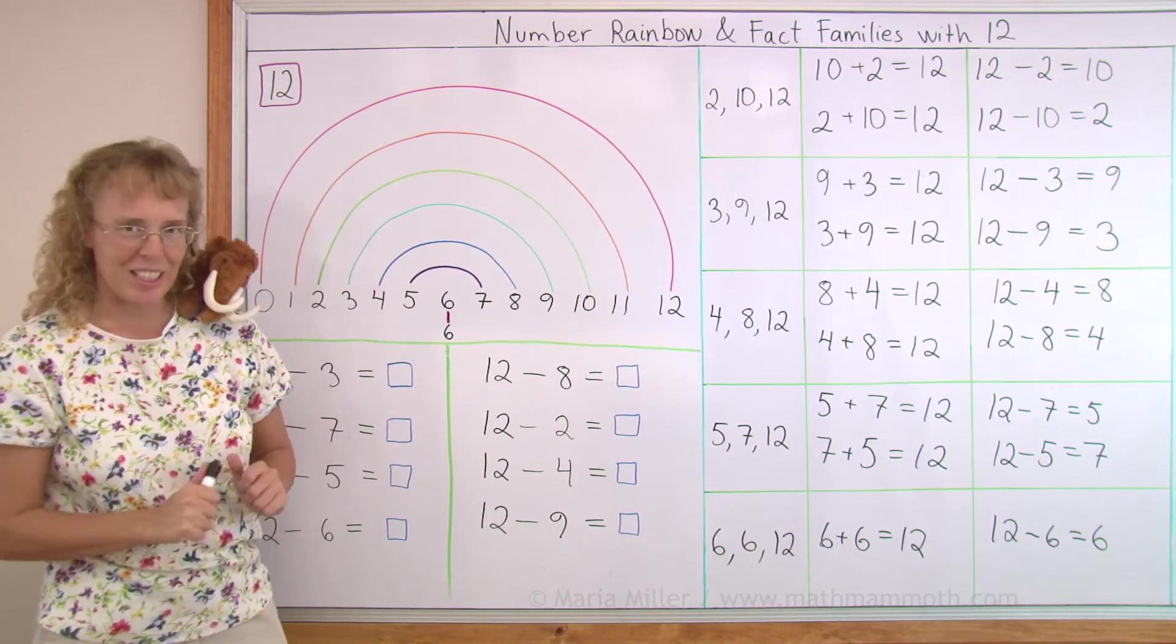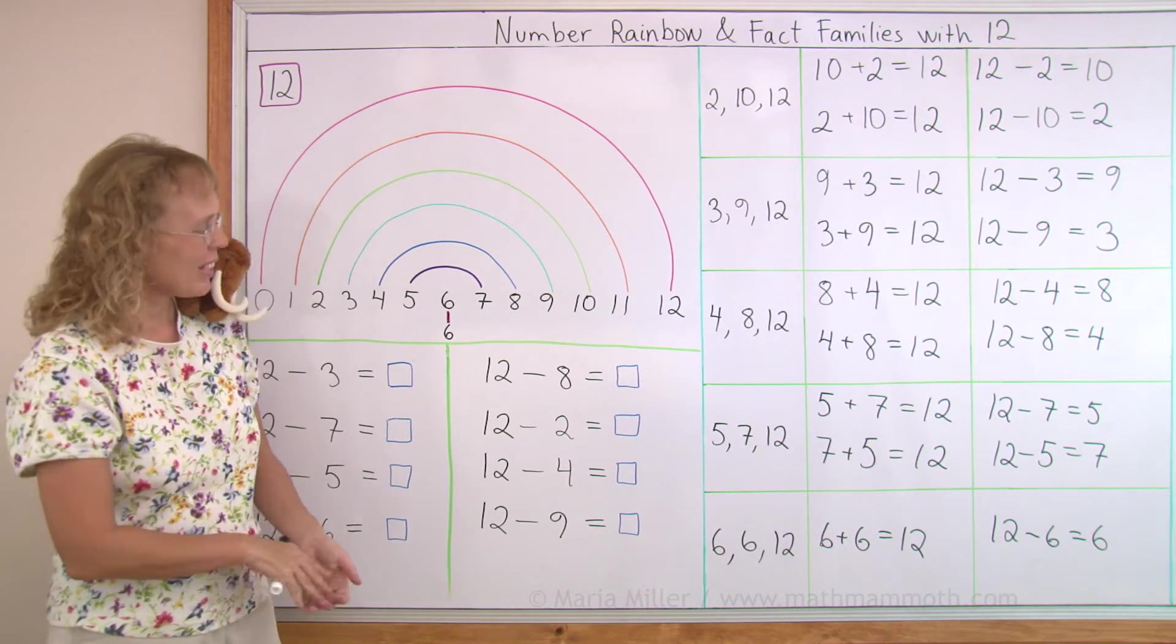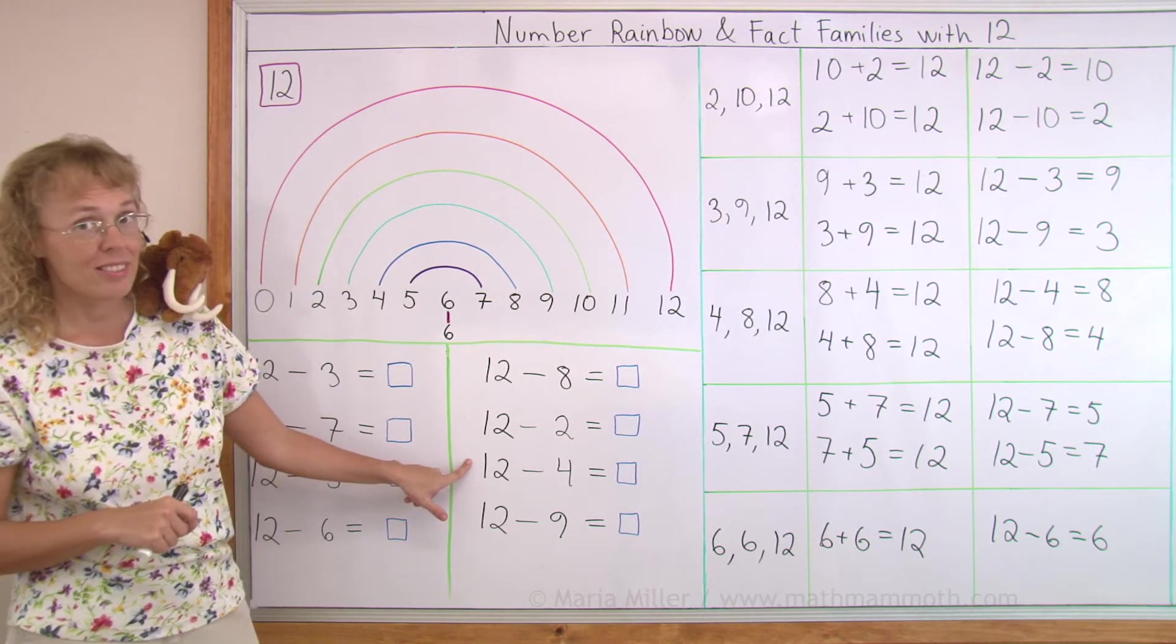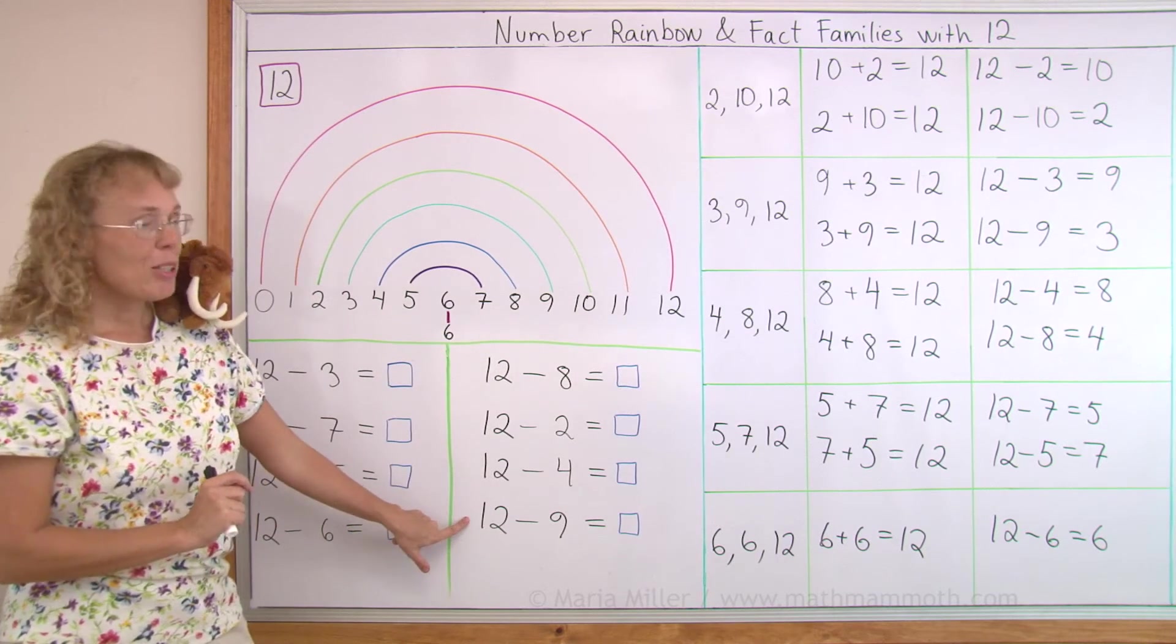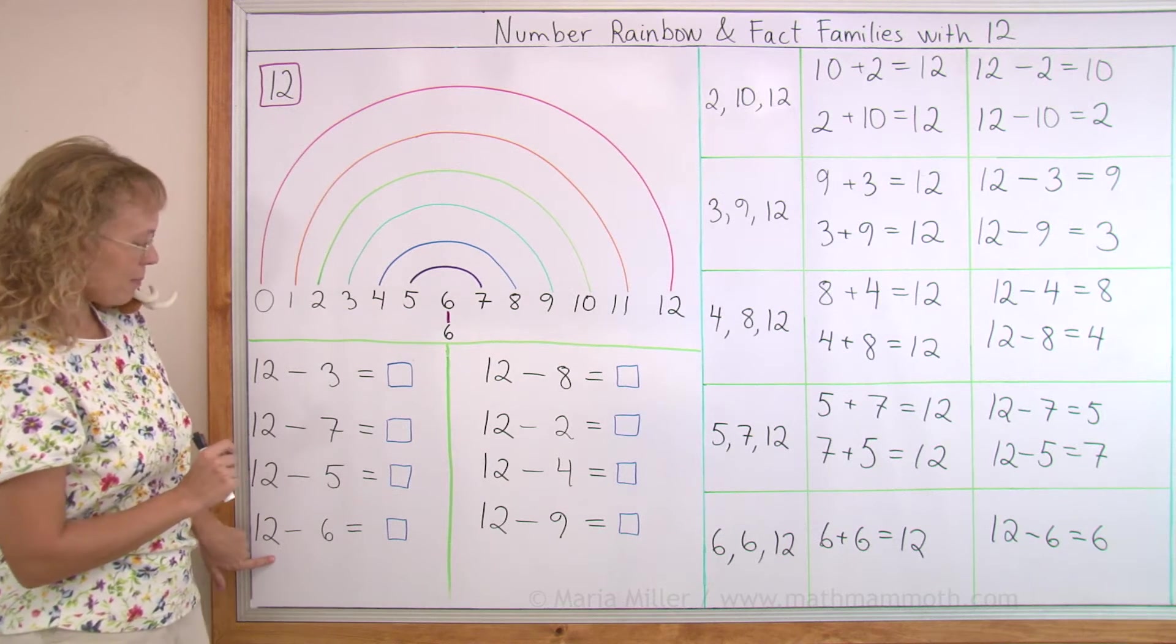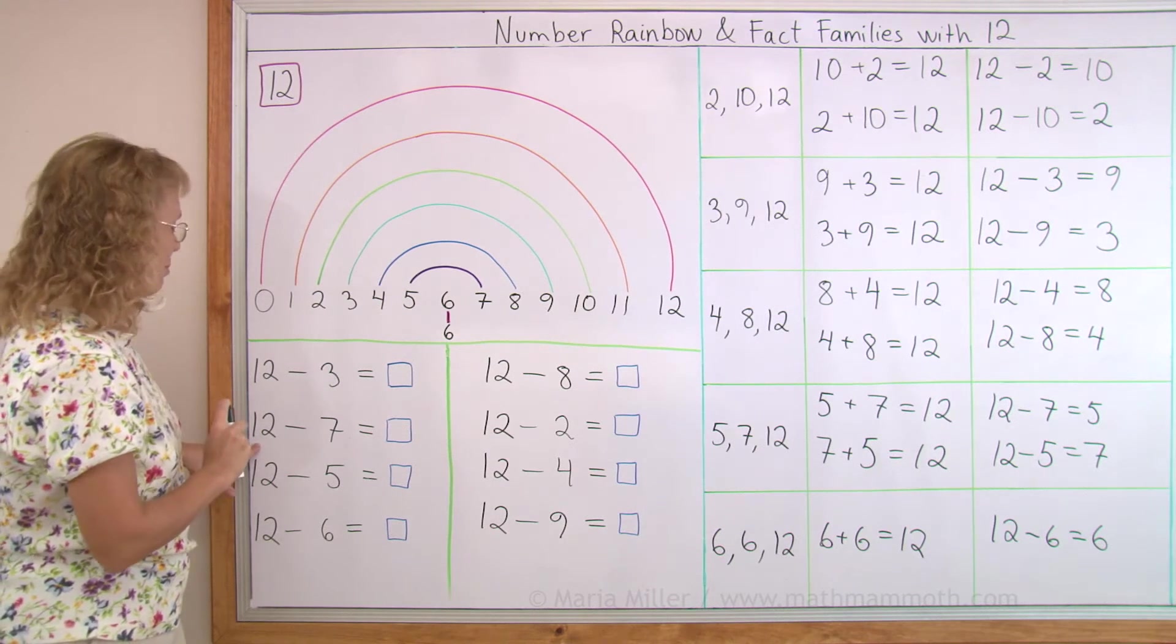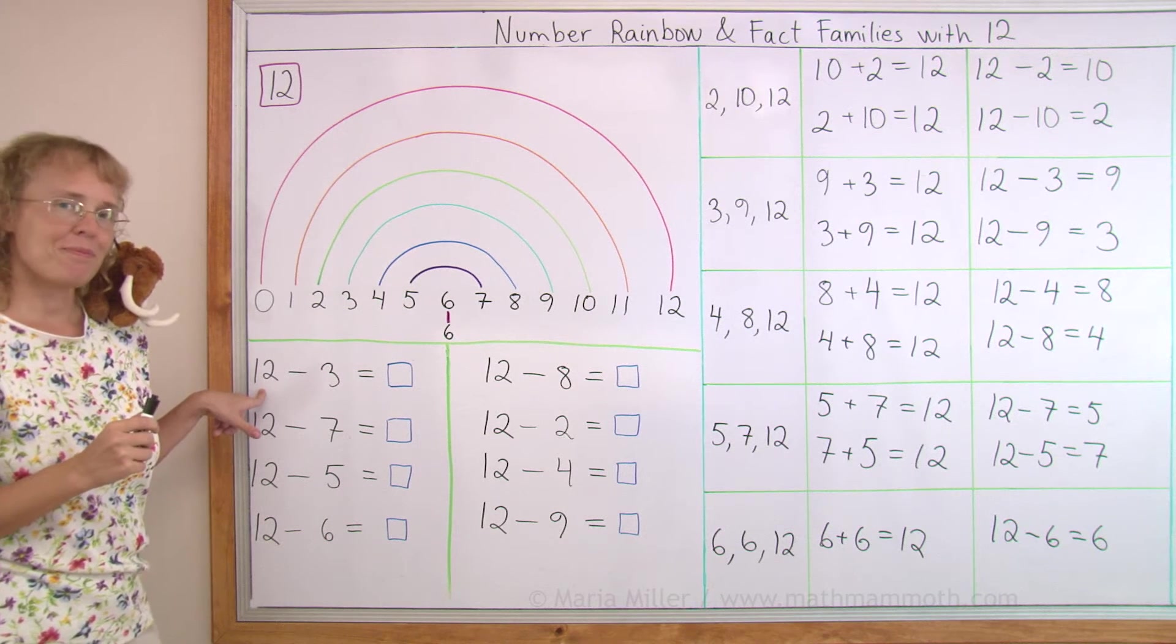And now we're going to do some drilling. I'm going to point to problems as usual and you answer as fast as you can. 12 minus 8. 4. 12 minus 2. 10. 12 minus 4. 8. Because 8 and 4, 4 and 8. 12 minus 9. 3. 12 minus 6. 6. 12 minus 5. 7. 12 minus 7. 5. And 12 minus 3. 12 minus 3, it's 9.